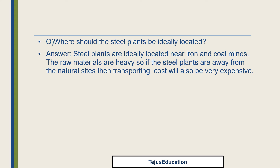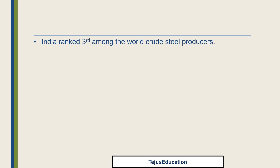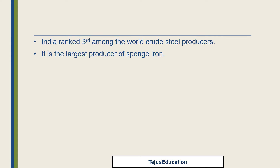India is ranked third in the world among crude steel producers. Crude steel is the first solid steel produced after the solidification of liquid steel. India is also the largest producer of sponge iron. Sponge iron is used as a substitute for scrap and is useful in making steel. Scrap is also important to control heat in the steel-making process.